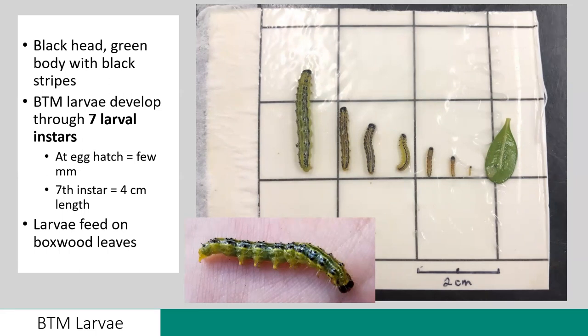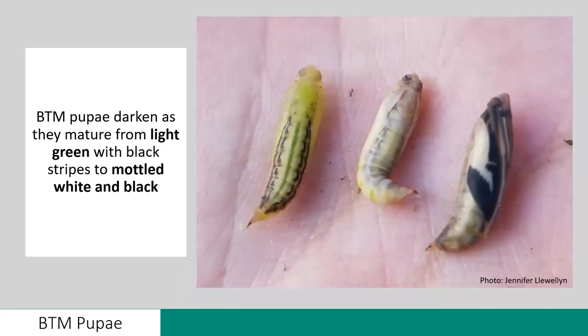This larval stage is the one that feeds on the boxwood leaves. For the BTM pupa, they also change in colour as they mature. They start out reflecting the larval colours — that light green with visible black stripes — but as they mature they reflect colouring closer to the adult, with black and white mottling. You can actually see that colouration visible on the adult wing.